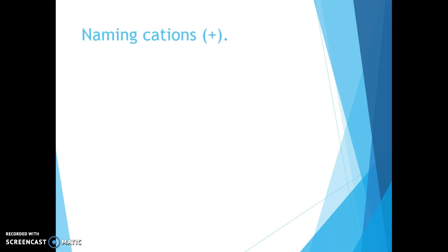How do we name positive cations? We use the name of the metal. Because Na is called sodium, we call Na+ the sodium ion. Cations get their own name with 'ion' at the end — sodium ion.